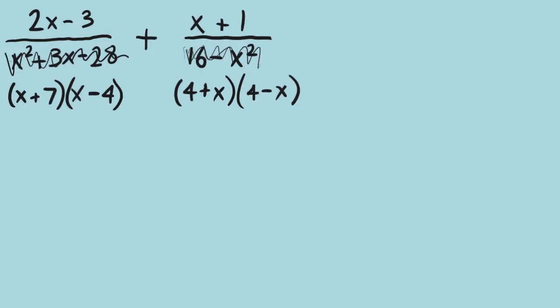Now we build the LCD. We need to use x plus 7 once. What else? x minus 4 — we have it once, and there's also a 4 minus x. We know those are opposites, so there's something going on there. How about 4 plus x? There's nothing else that's a 4 plus x. Since it's addition only, 4 plus x can be rearranged — addition can be done in any order — so 4 plus x automatically becomes x plus 4.